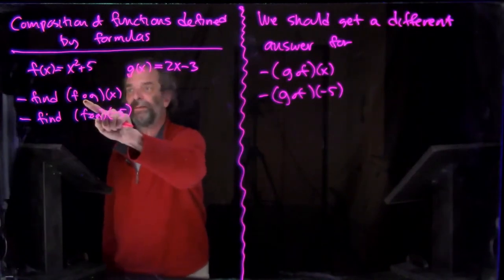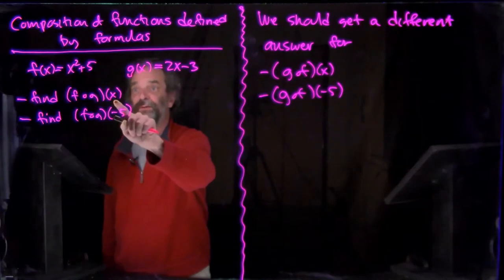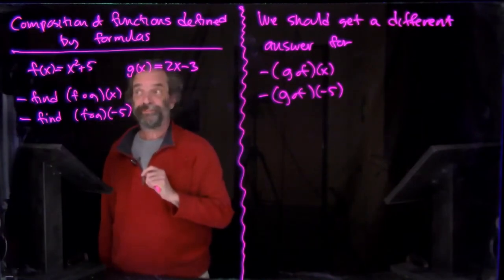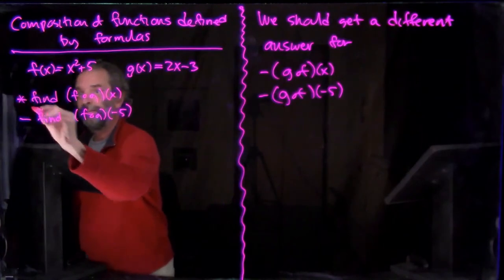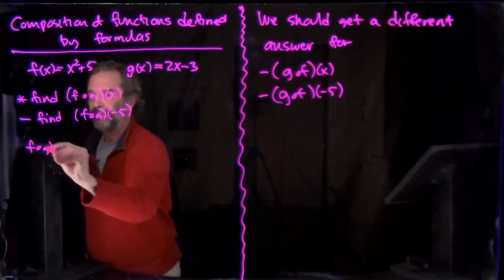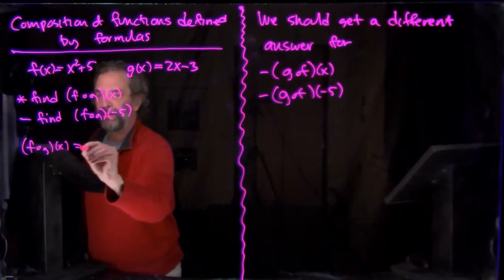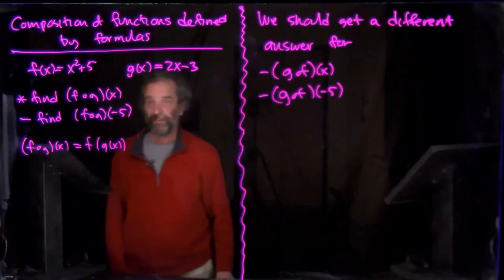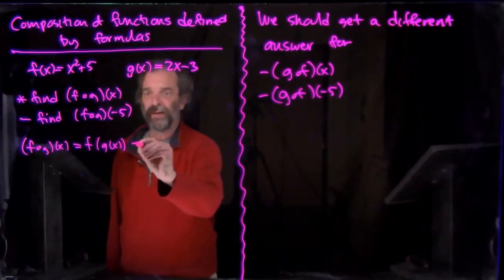What we're going to do is find the formula for f composed with g at x, and then we're going to plug -5 in for x. So let's go ahead and do that. f composed with g at x is f(g(x)). Now it gets complicated.